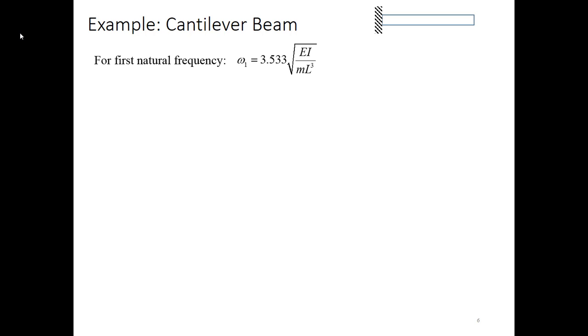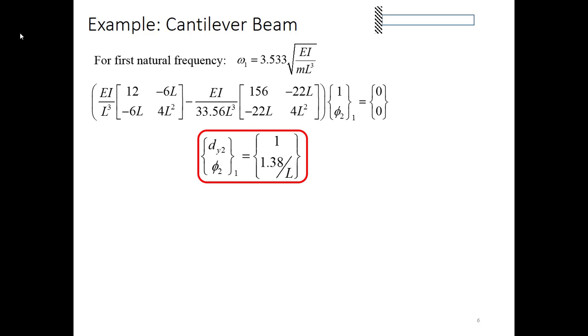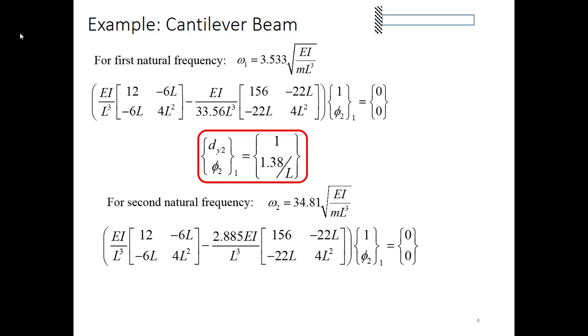So continuing with this cantilever beam, looking at the normal modes. Here's our first natural frequency. Plug that in for omega1 in the equation that we need to solve for phi2. And we get a solution where I've plugged in, of course, dy2 equal to one. And then when I solve either of the above two equations, I get phi2 is equal to 1.38 divided by L. Doing the same thing for the second natural frequency. Plug it into the equation and I obtain the normal mode for the second natural frequency. And that is dy2 equals 1 and phi2 is equal to 7.62 over L.